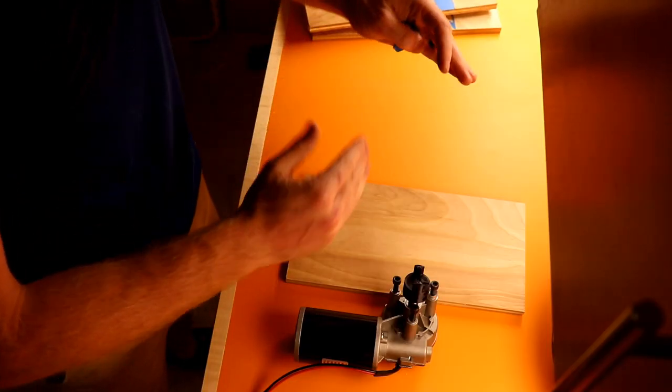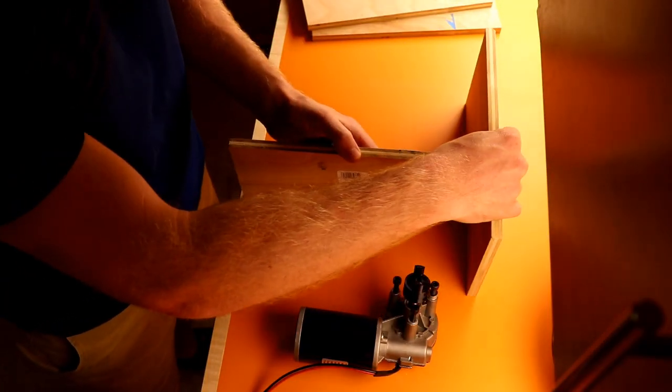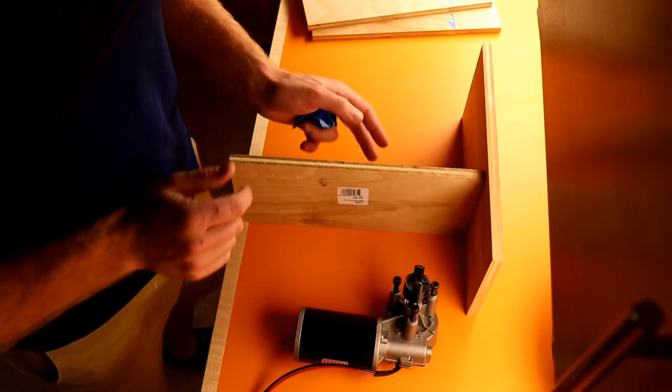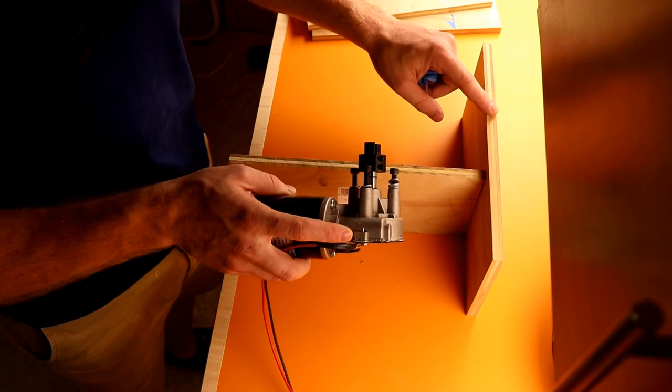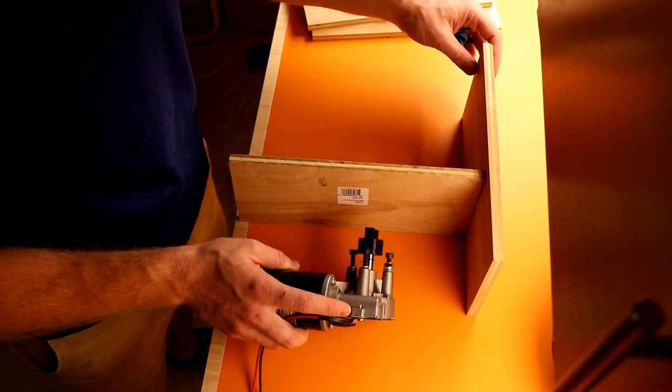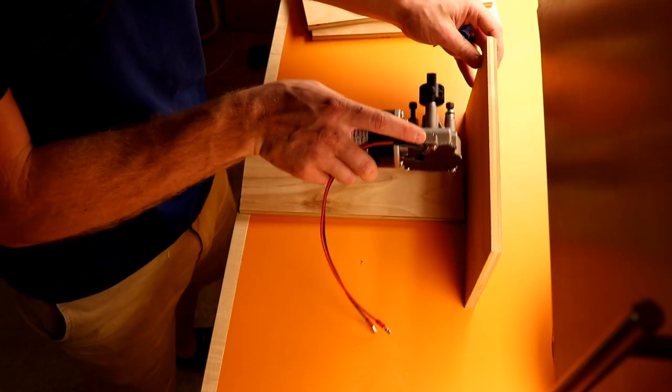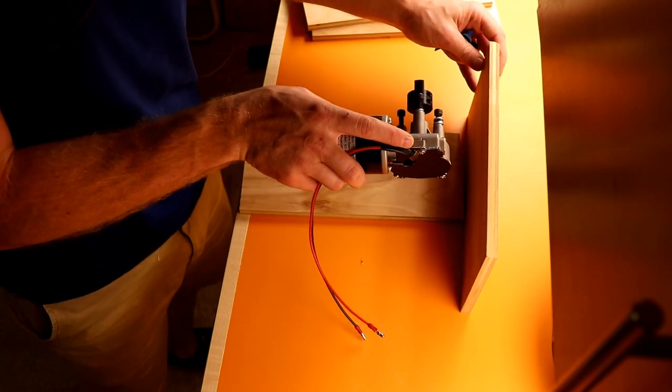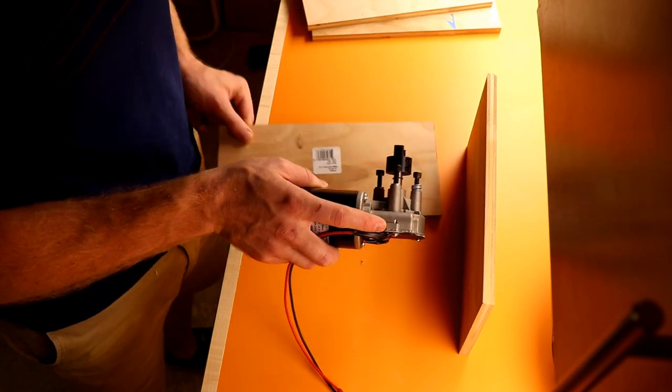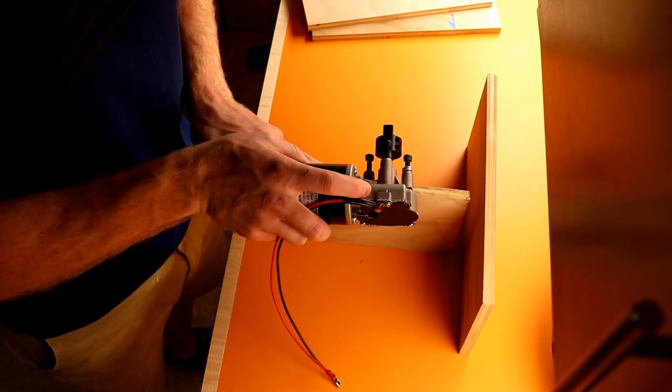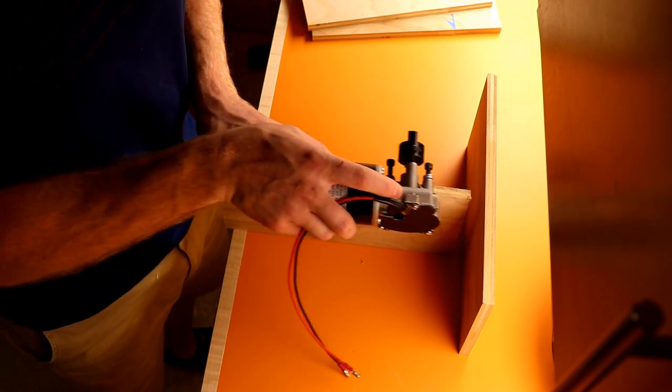The mount's gonna be like an L shape per se where this is mounted here and this is mounted to the table. And I'm gonna have slots in it so I can move it closer and back from the drill press to match it up. And I also wanna have slots in here so I can move this up and down so I don't have to get it exact.